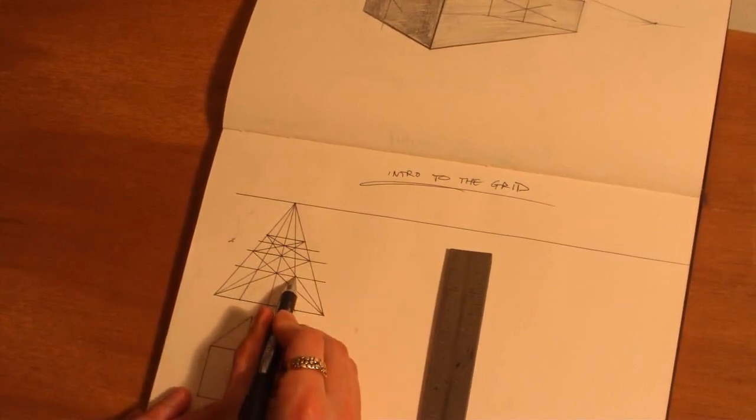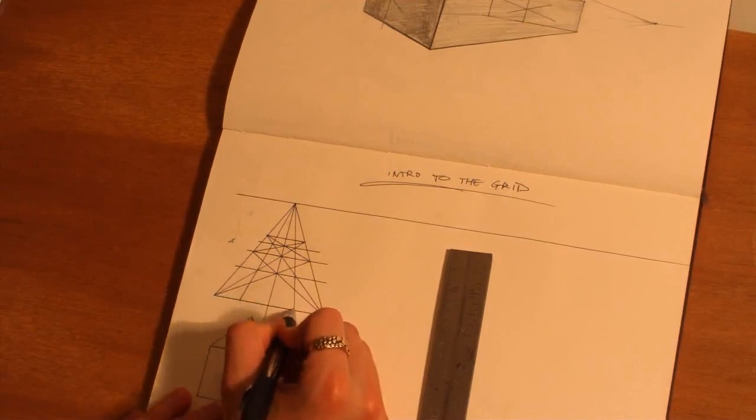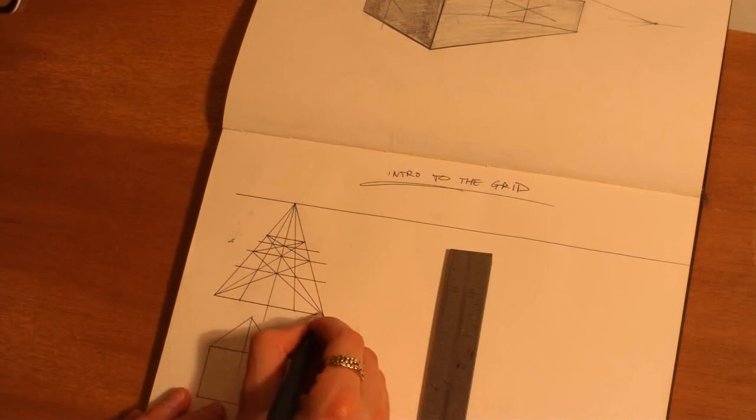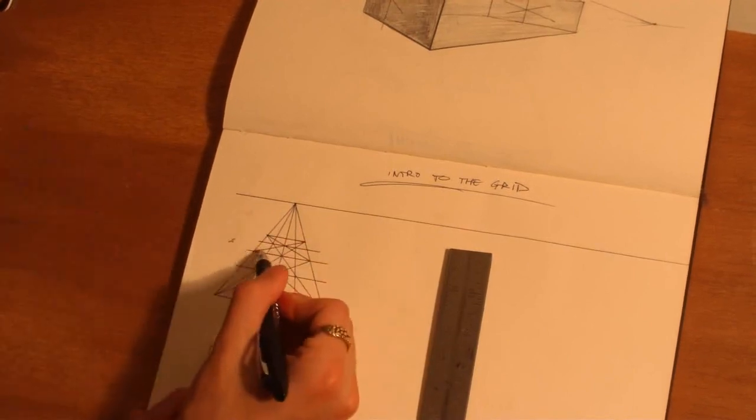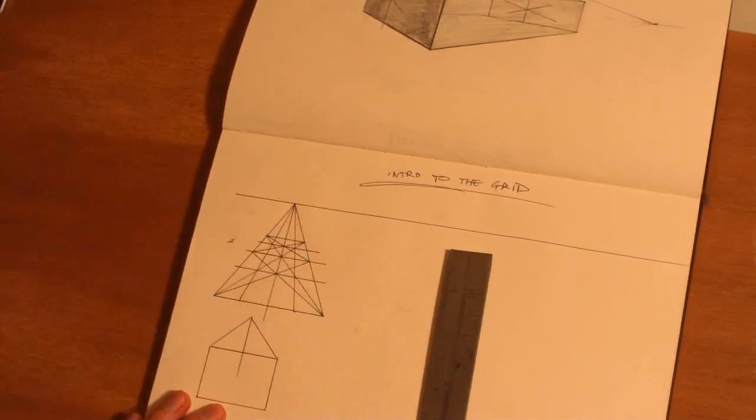If you know that one block is, say one solid you're drawing is one block on its footprint, and another is four blocks or two blocks on its footprint, you can accurately project them together.